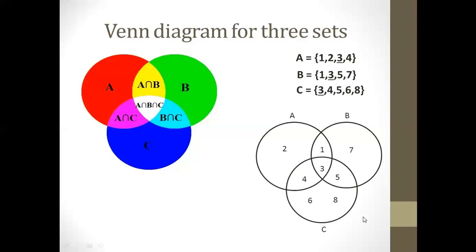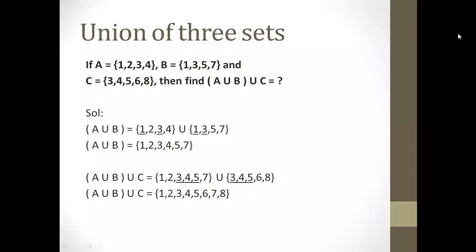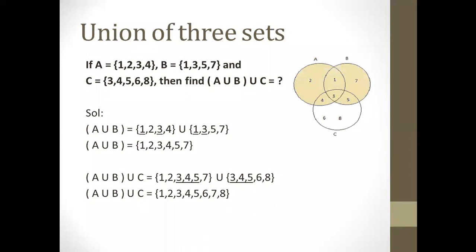After inserting all elements into the Venn diagram, let's look at the shaded region for A union B union C. As we found the answer in two steps — first A union B, then union with C — similarly we show the shaded region in two steps: first shading A and B, then including C.